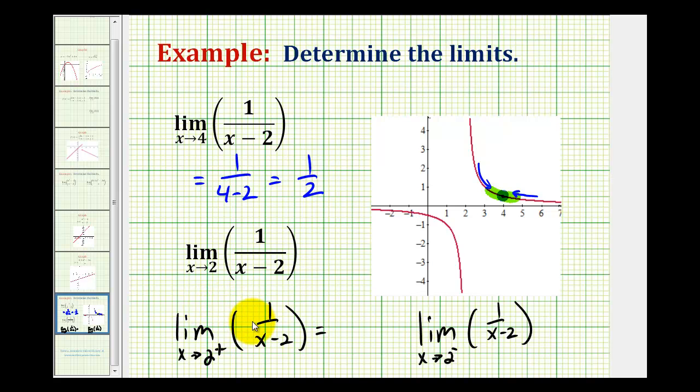One thing to notice right away is as we approach two, whether from the left or right, the denominator is approaching zero. So we have a constant one divided by a smaller and smaller number.